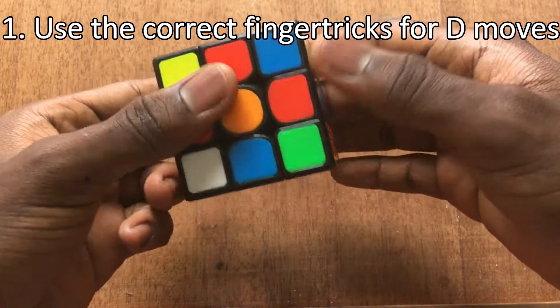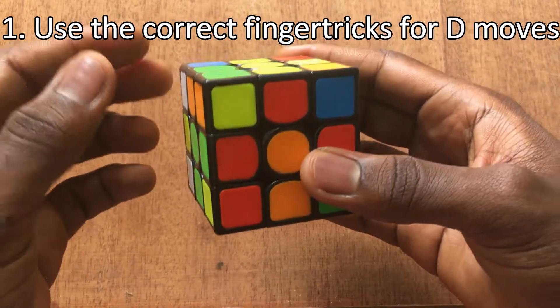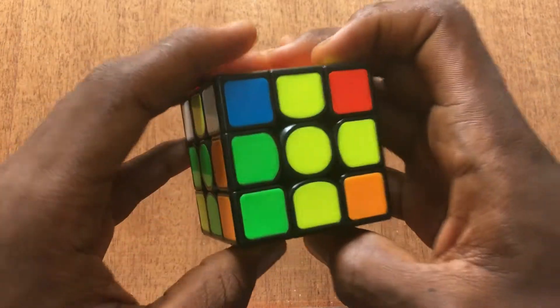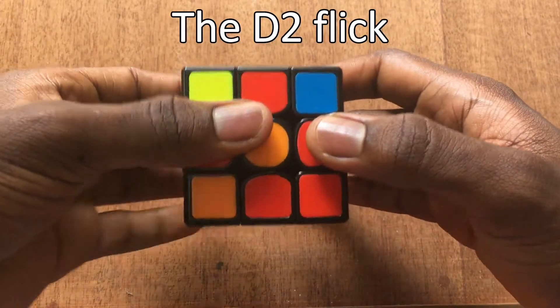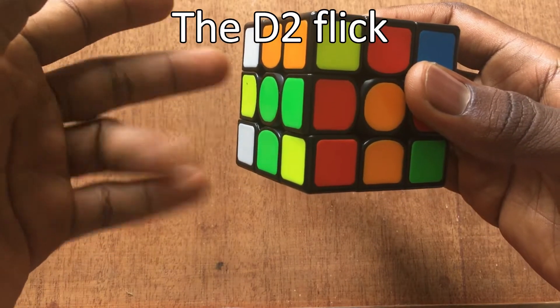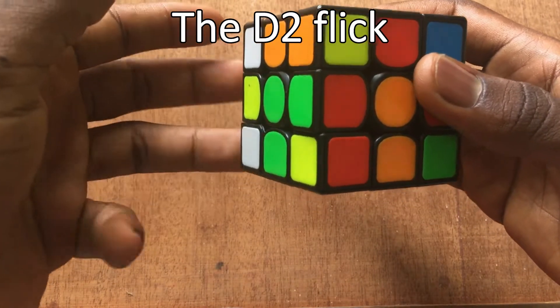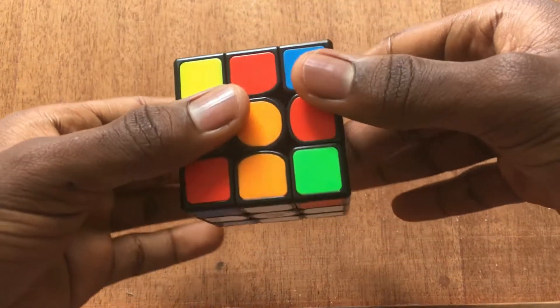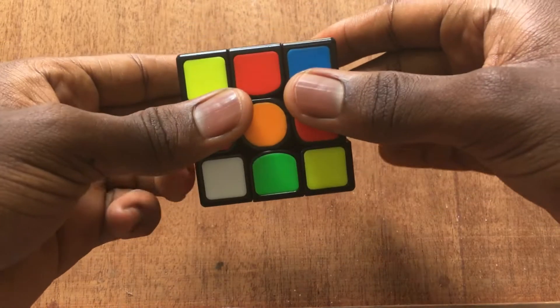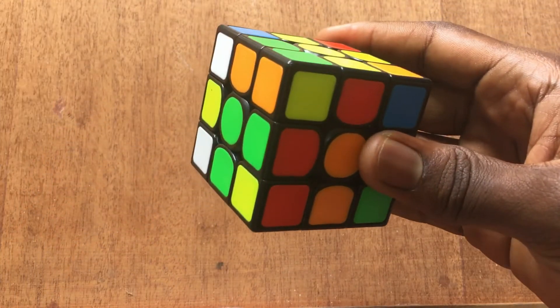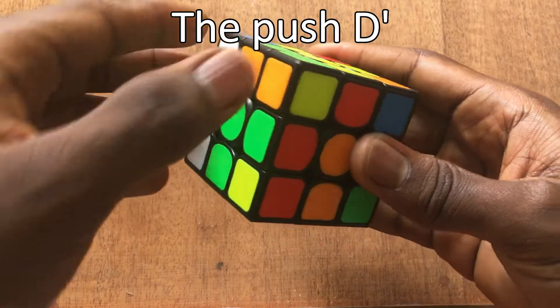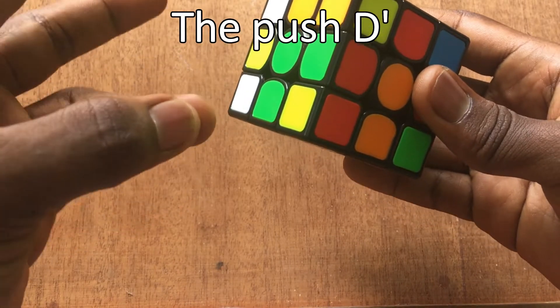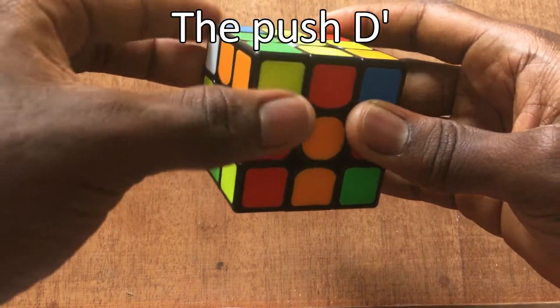And also because we are solving our cross on the bottom now, we have to be aligning our cross using D, D prime, or D2 as the case may be. So therefore we should get these finger tricks ingrained into our fingers. The fastest way to do D2 is by doing the D2 flick. Now you can either use pinky ring or ring pinky. Personally I use pinky ring so you can just do it like this: D2 flick. We should also know how to do our regular D and D prime moves like this. And then another D prime move we have to learn is the push D prime, so this is done like this, by using our ring finger to push on this sticker over here.